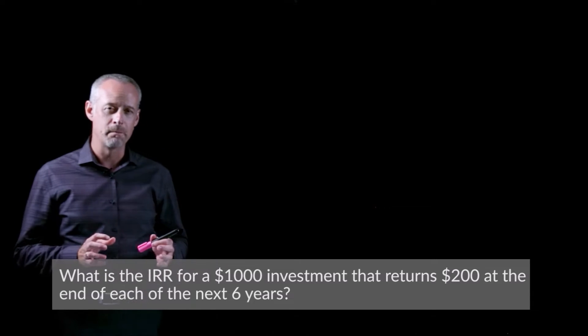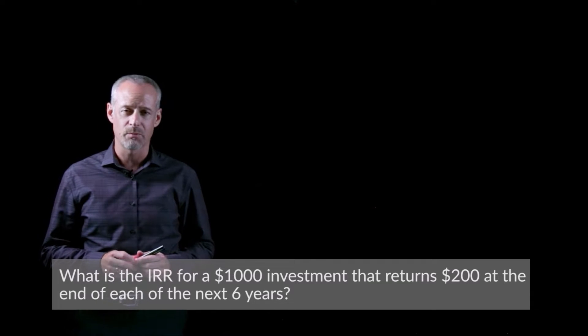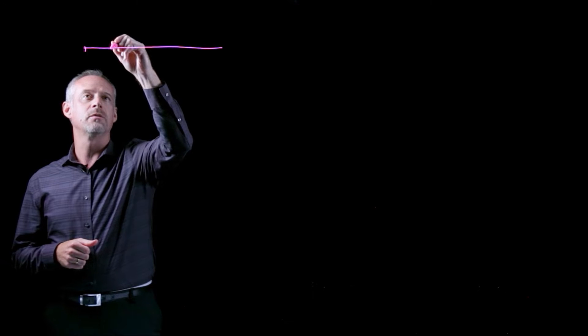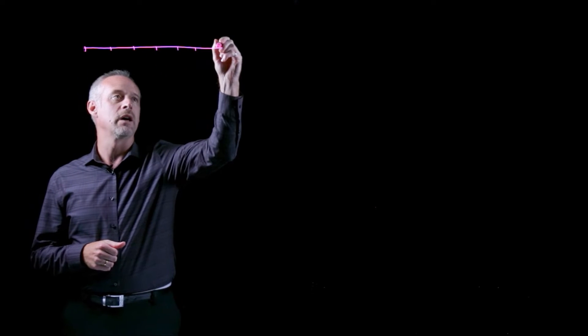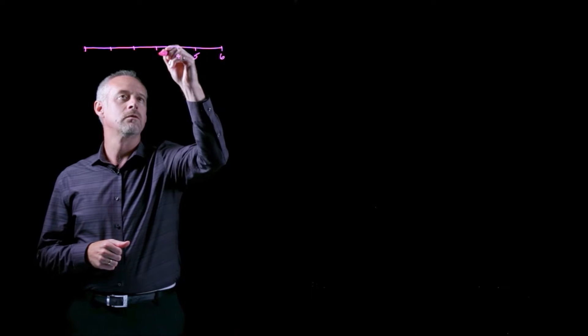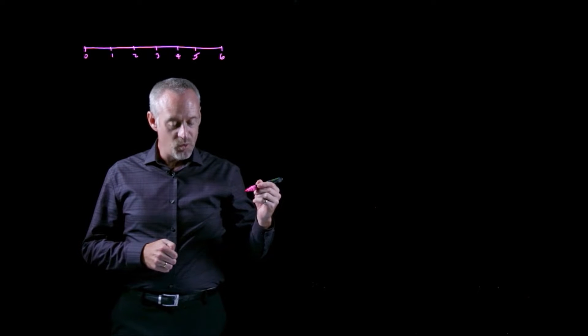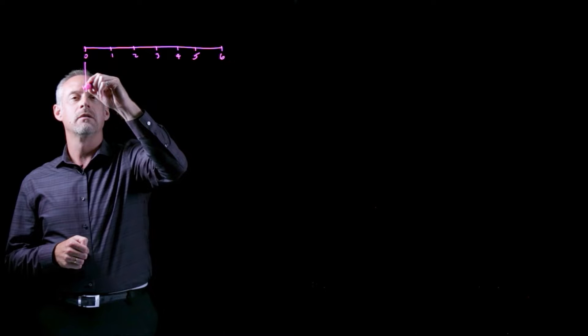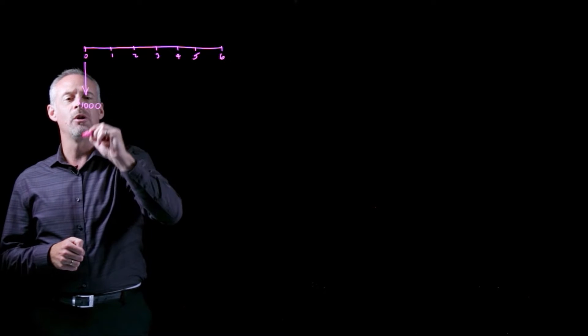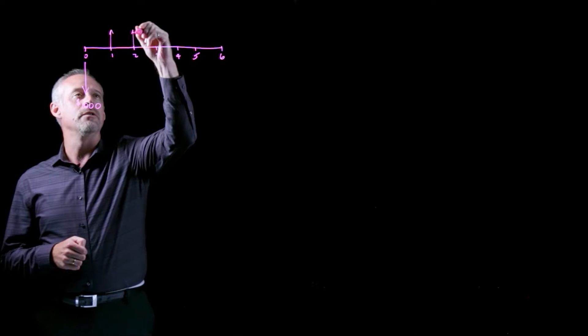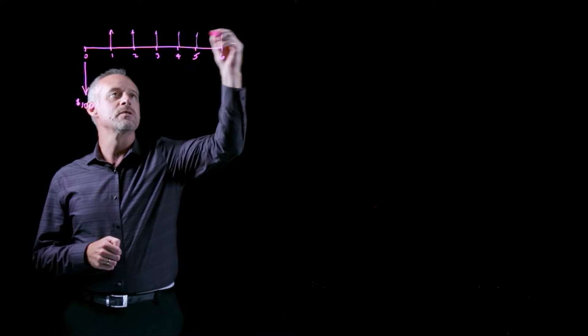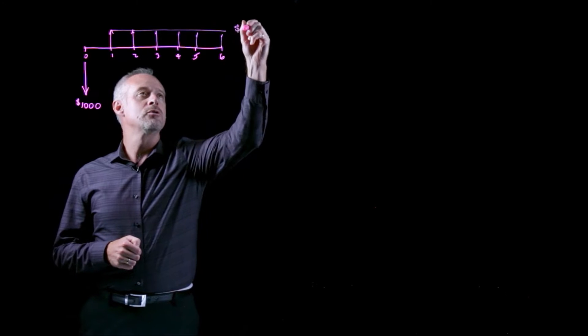I'll start this problem the same way I like to start most engineering economics problems, and that is with a cash flow diagram. We learn in the problem that our timeline is six years — one, two, three, four, five, six. We also learn that we have an investment of $1,000 that gives an annual return for each of the six years of $200.